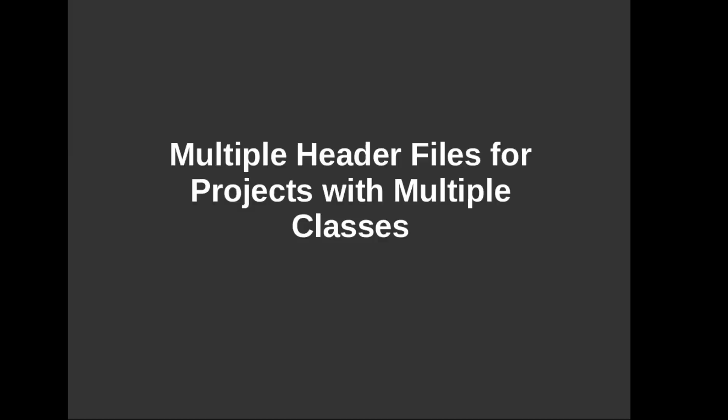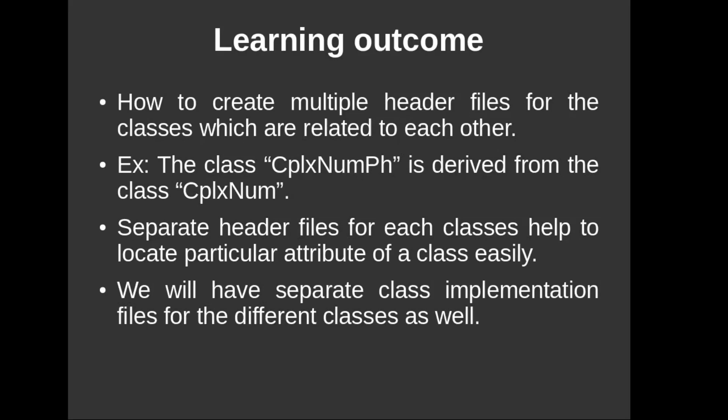So far, we have been working with two classes, namely cplxnum and cplxnumph. The cplxnumph class was the derived class of cplxnum. However, both the cplxnum and cplxnumph classes were sharing the same header file and implementation or cpp files. It is a good practice to have different header and cpp files for different classes, as this will help in maintaining your project efficiently.